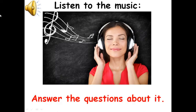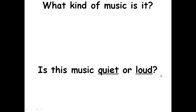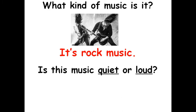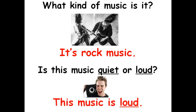Next composition. Listen and answer. Слушаем следующую композицию и отвечаем о ней на вопросы. What kind of music is it? It's rock music. Right, you are. Верно. Это рок музыка. Is this music quiet or loud? Translate the question. Переводим вопрос. Эта музыка тихая или громкая? This music is loud. Верно. Эта музыка громкая.